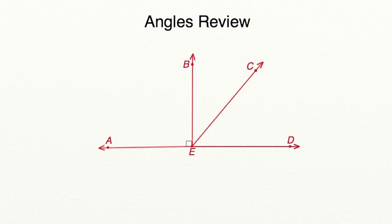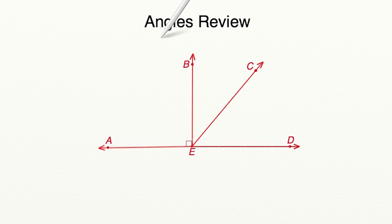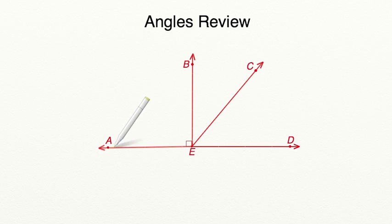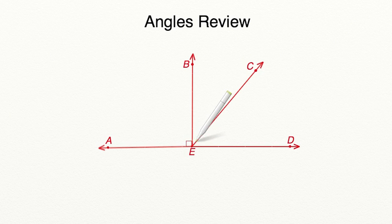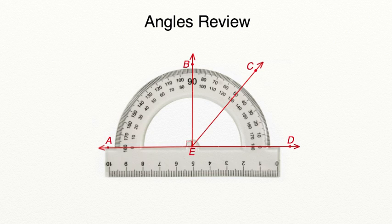We are going to begin today by reviewing this diagram on the screen that is full of angles. Now remember, this is angles review, so let's review what an angle is. An angle is two rays that meet at a center point that is called the vertex. To measure an angle, we are going to be using a protractor today. A protractor is going to help us find the exact degree the angle is.